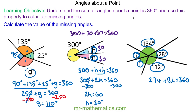We can take away the 274, so 2i will equal 86 degrees, so one of the angles will be equal to 43 degrees.